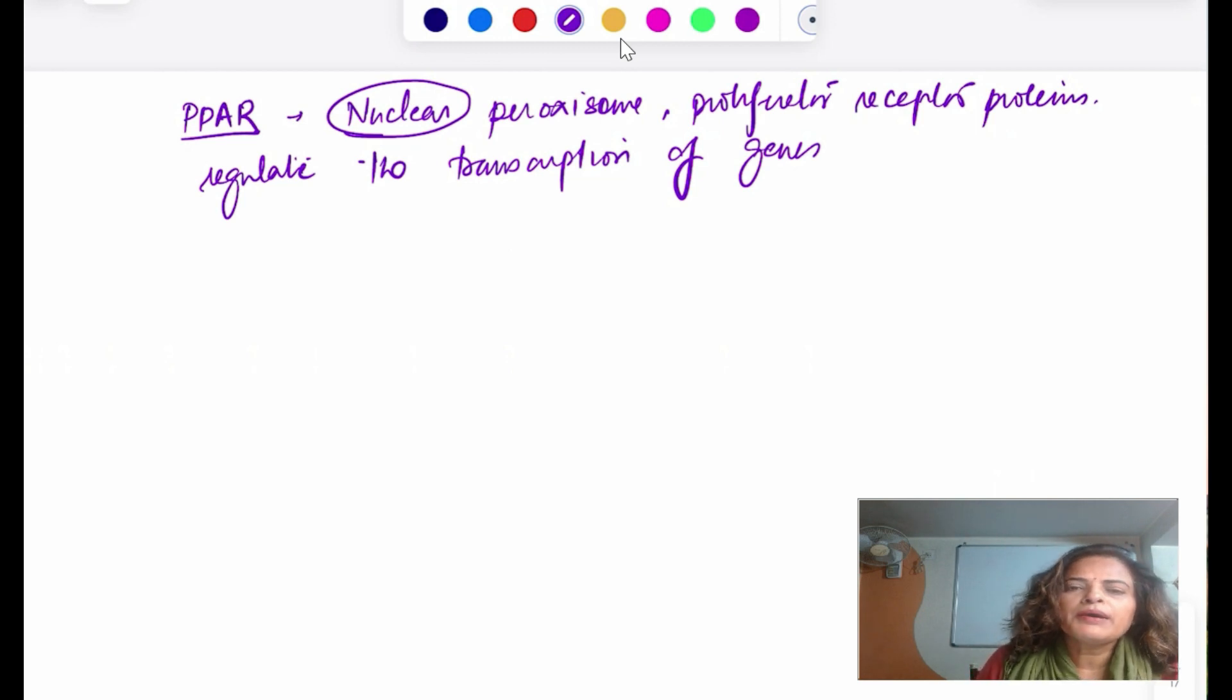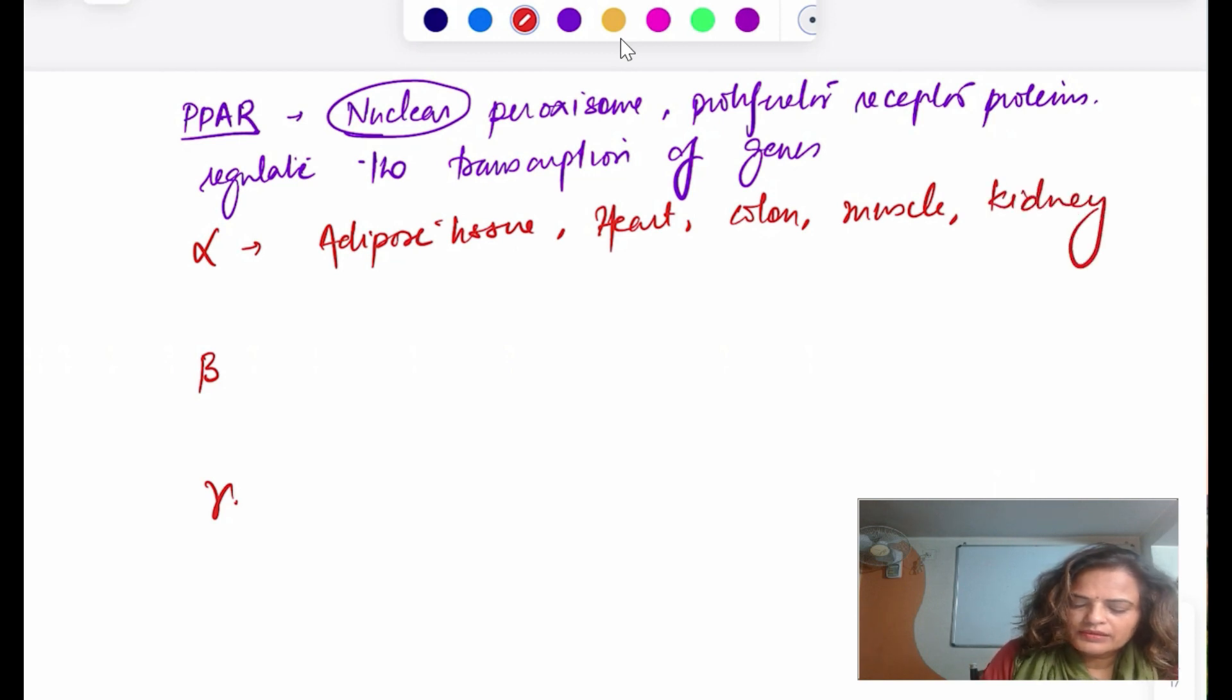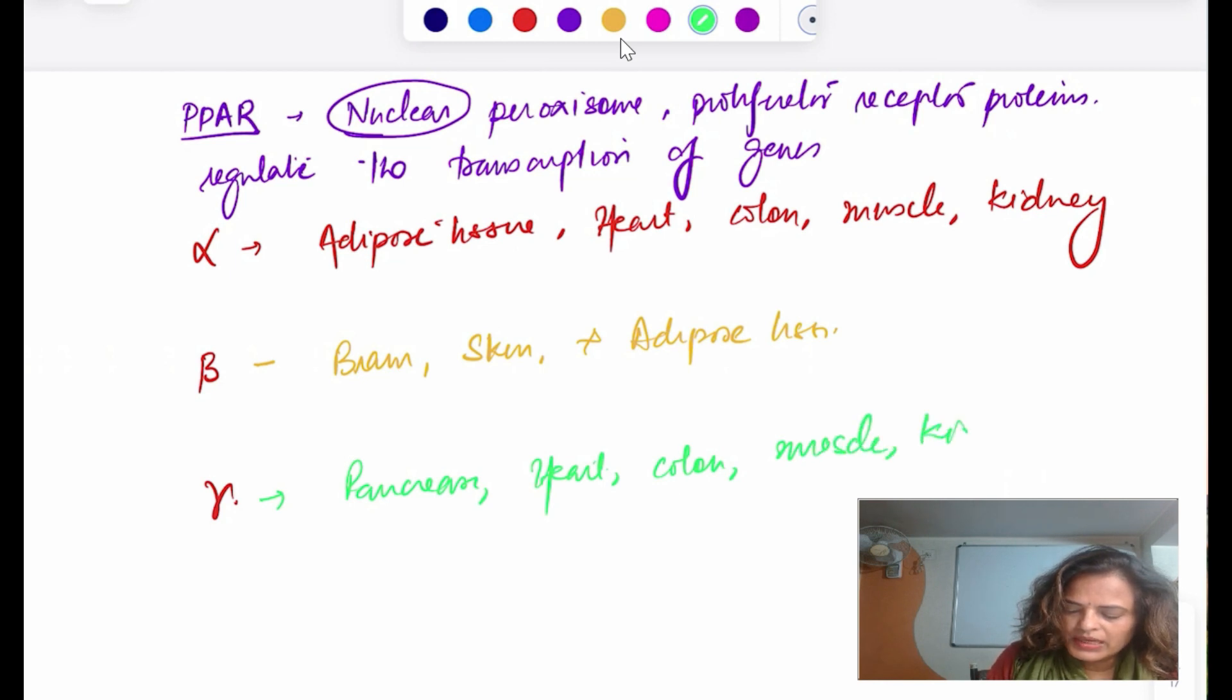How many types of PPAR are there? Alpha and gamma. They are of alpha, beta, and gamma. Alpha is mainly expressed in adipose tissue, heart, colon, muscle, kidney. Beta is expressed in many tissues but mainly in brain, skin, and adipose tissue. Gamma is mainly expressed in pancreas, heart, colon, muscle, kidney, spleen, macrophages, and adipose tissue.